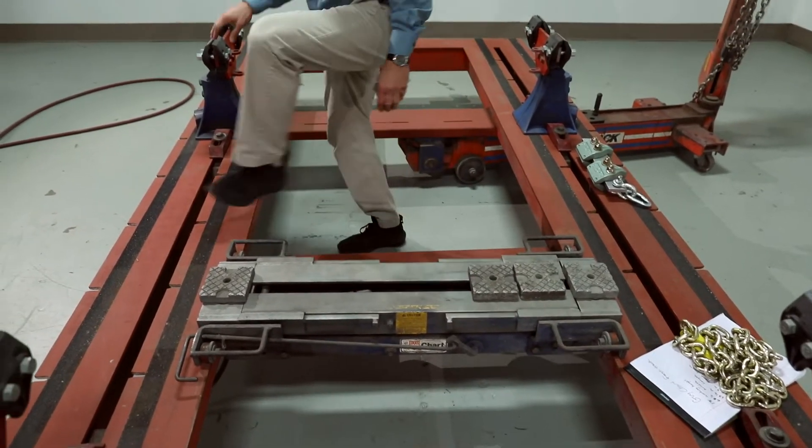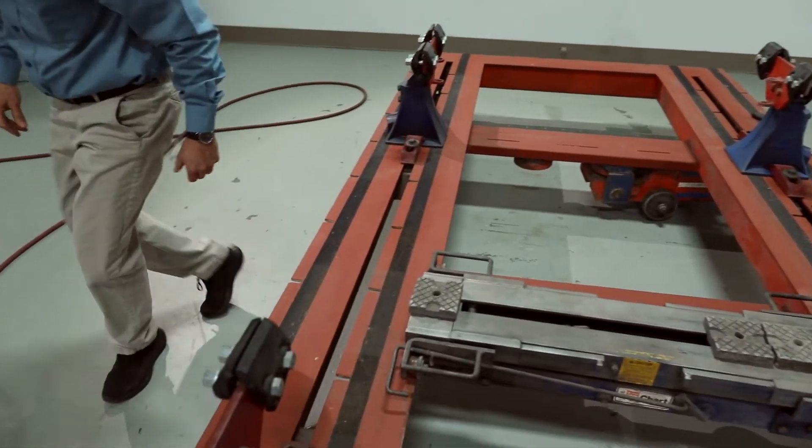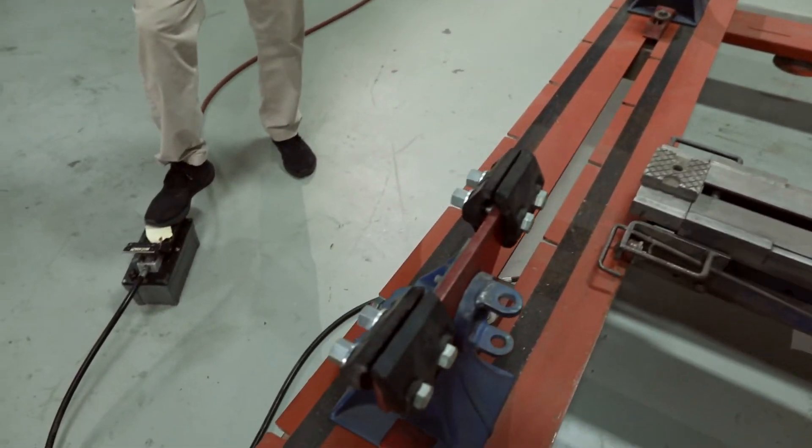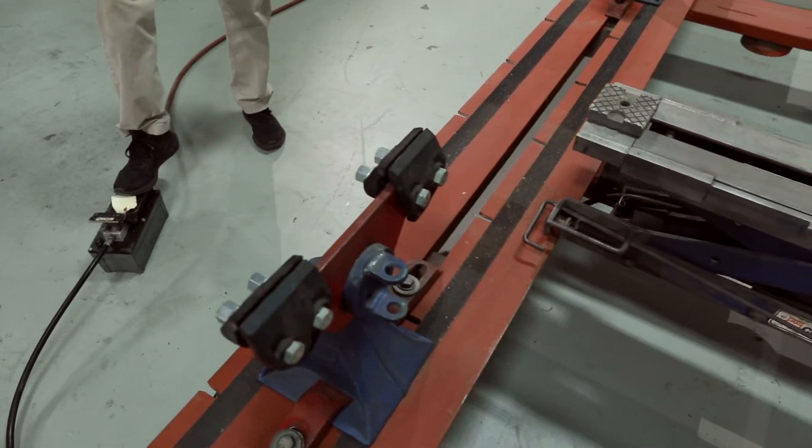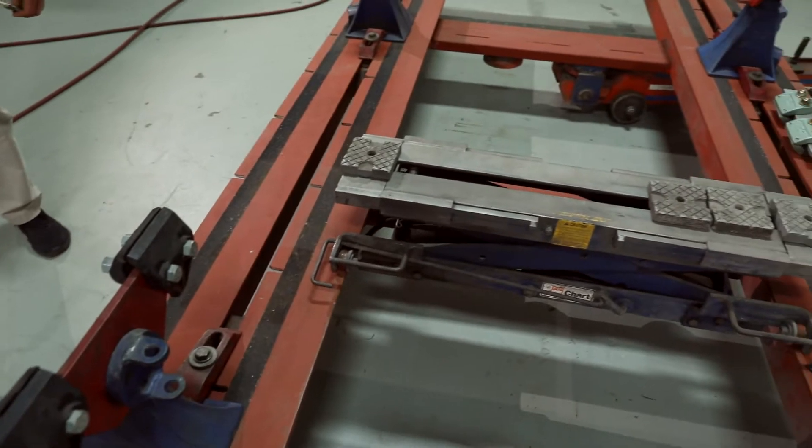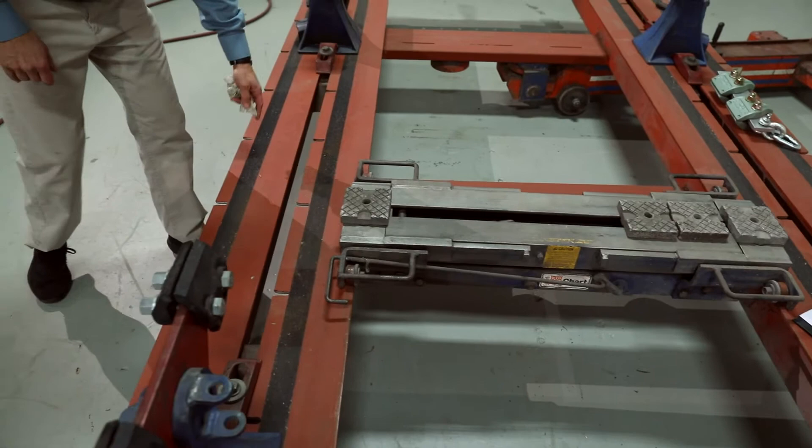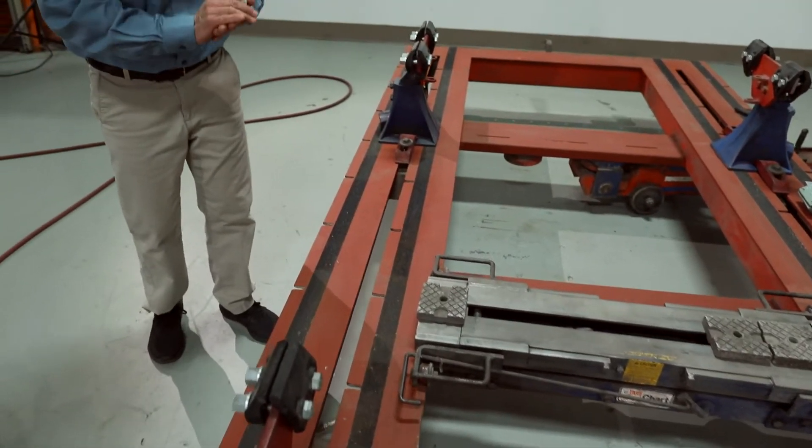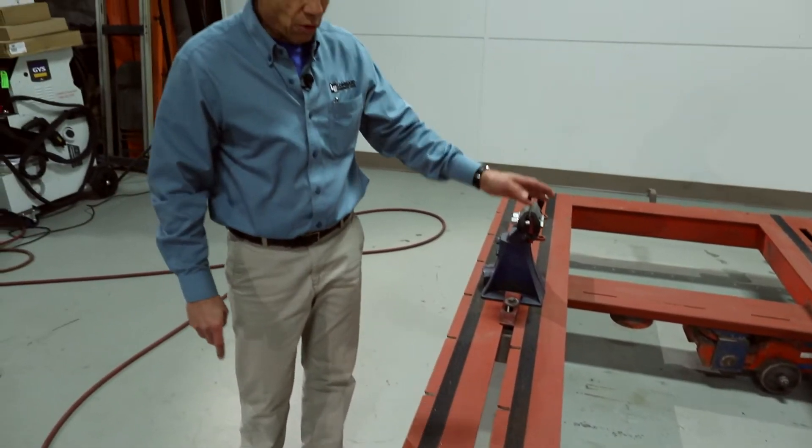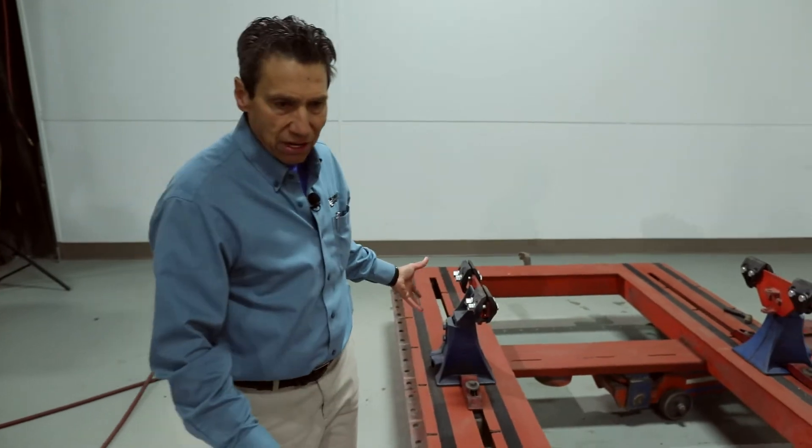You can position it where you want. It has over 60 notch tie-downs, so if you want to use it for quick pulls without anchoring, you can just chain the vehicle down.